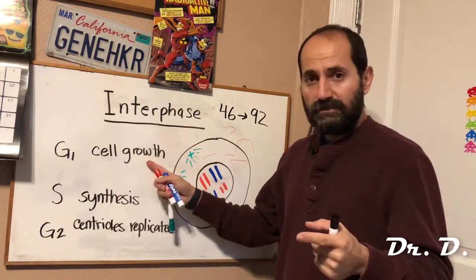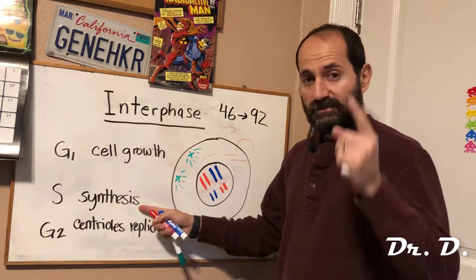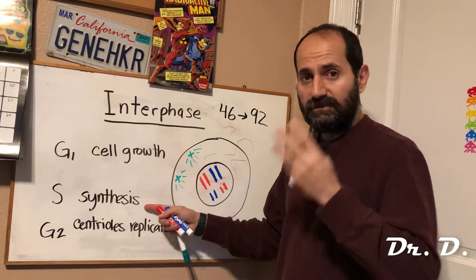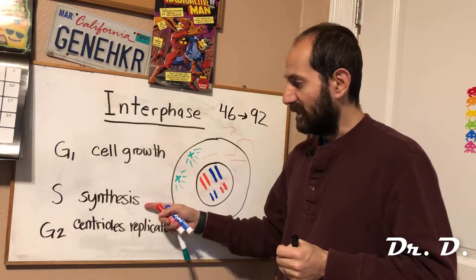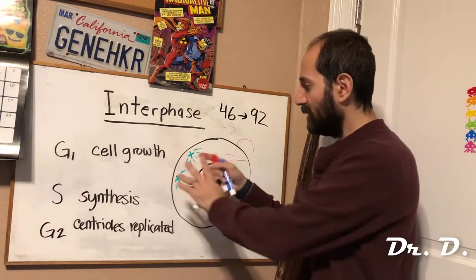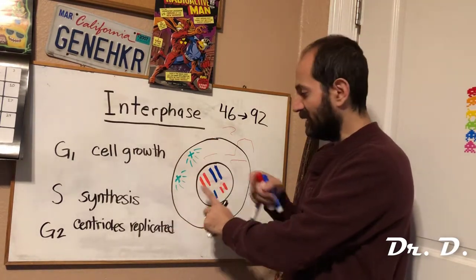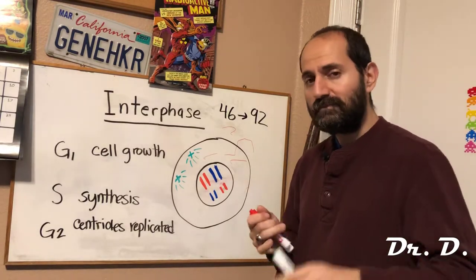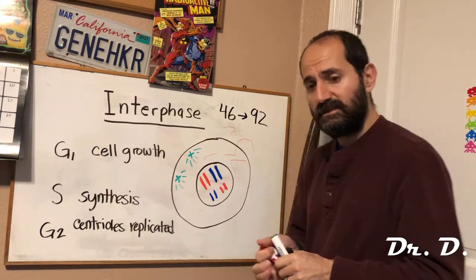The cell is growing during G1. It has synthesized its DNA. You've copied all of the chromosomes in S. And then in G2 you have replicated the centrioles and they are moving to opposite poles of the cell. The DNA is also starting to condense. By the way, one more point before the end of this video.